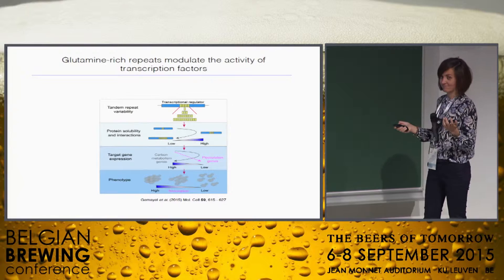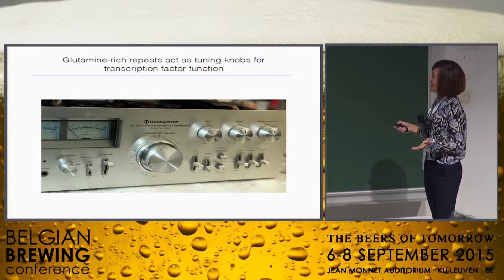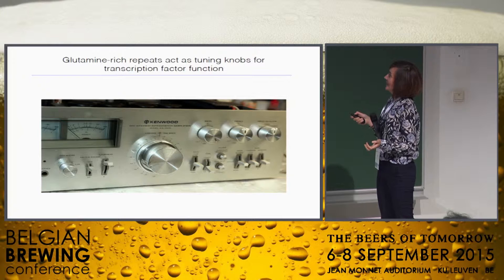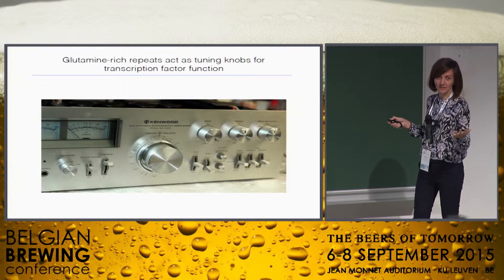For the engineers in the audience, I want to show this slide because I think it explains exactly what I'm trying to say. What we think is happening is that polyglutamine repeats act like a knob on a vintage radio — you tune the volume, and going too low or too high is not good. There's a whole spectrum of effect on the function of that gene.